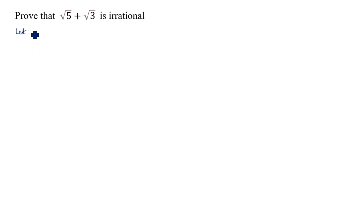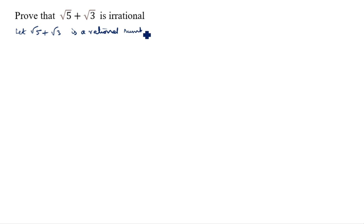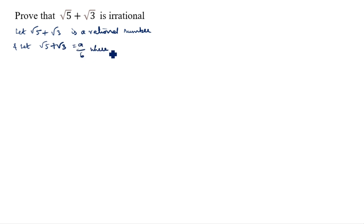Let root 5 plus root 3 be a rational number. And let root 5 plus root 3 equal to a by b, where a and b are co-primes.